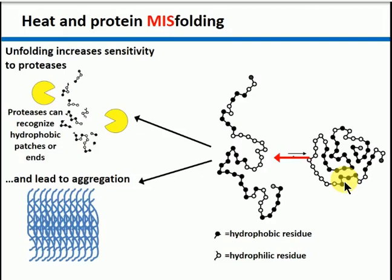As we get closer to conditions where the free energy of folding approaches zero, you have more protein in the unfolded state. Your protein is in equilibrium between folded and unfolded form, and as the free energy of folding gets closer to zero you have more protein in the unfolded form. That unfolded form is then prone to degradation — proteases can access the polypeptide chain and chop it into bits, since proteases won't digest a fully folded protein because the active site can't access the backbone. Or if the protein is concentrated enough, it will tend to aggregate and clump with itself.